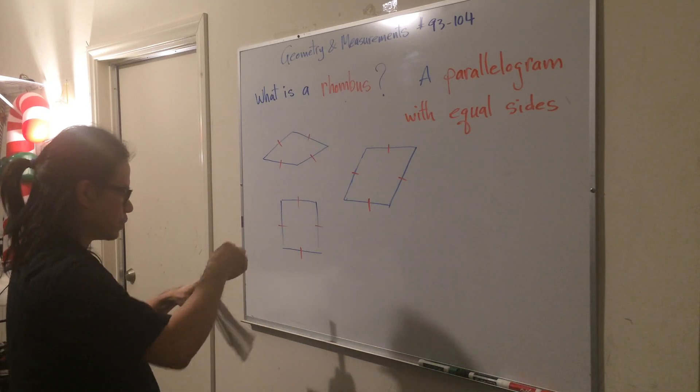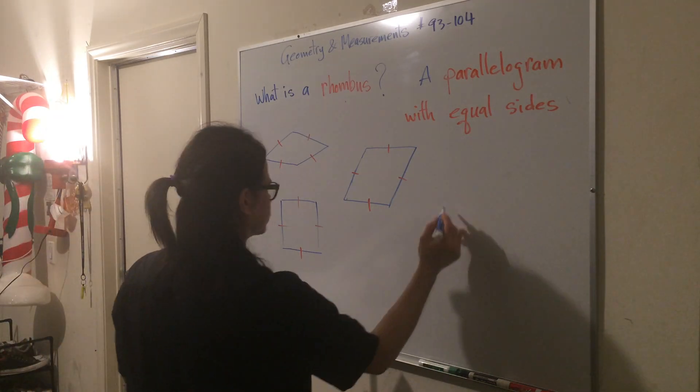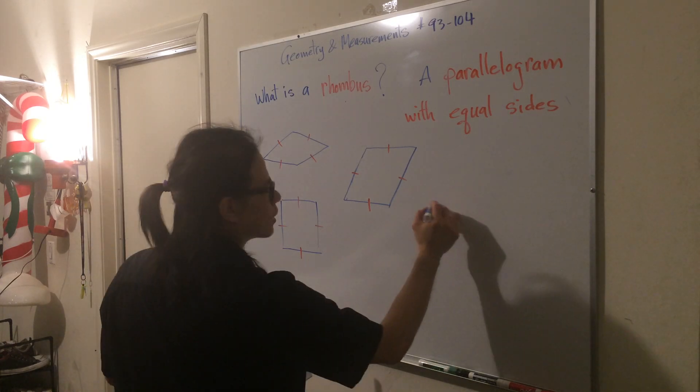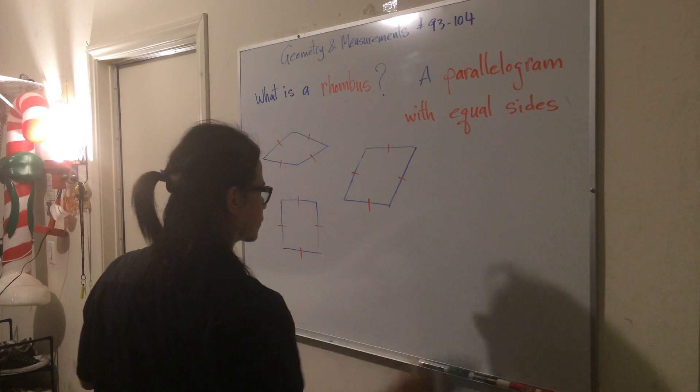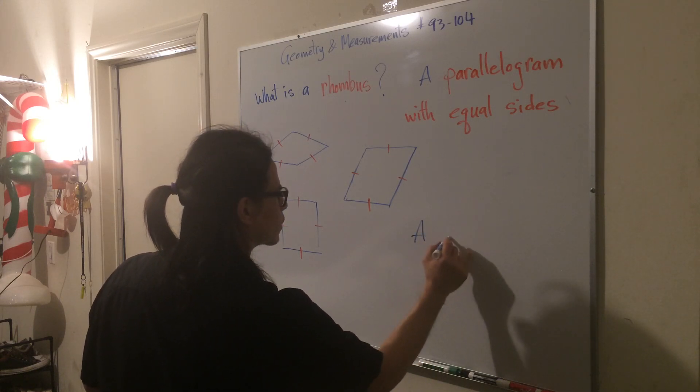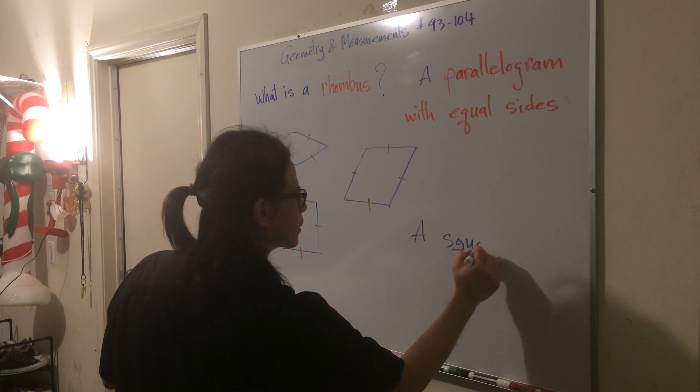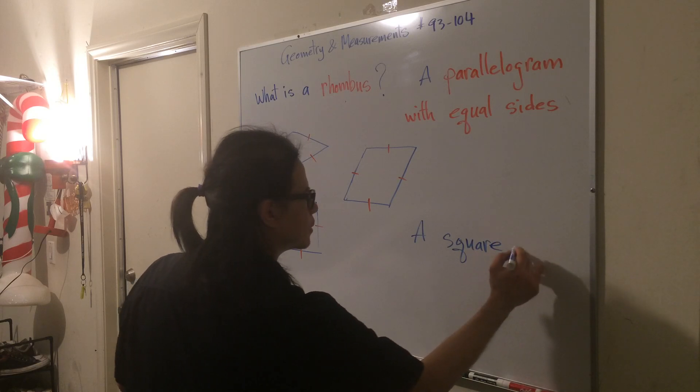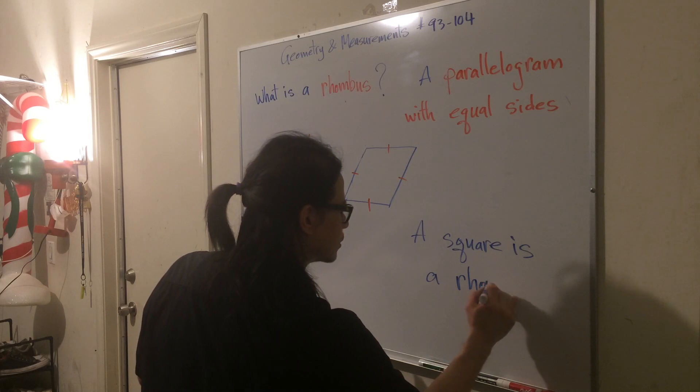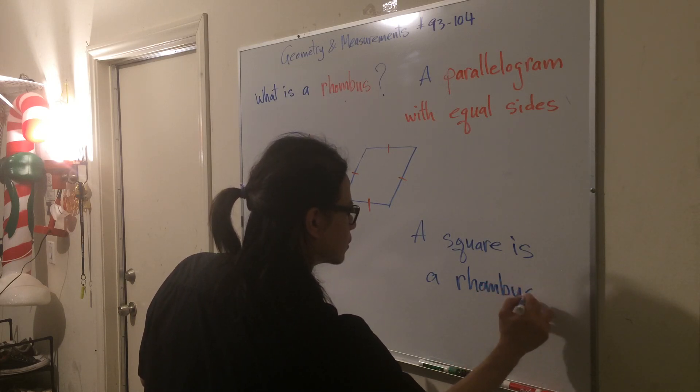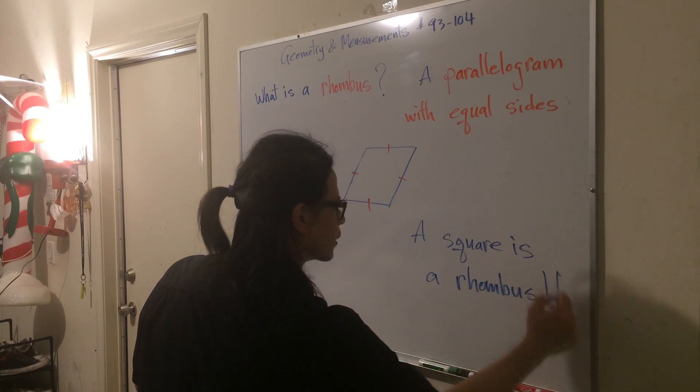So let's write it down so that we'll remember easier. A square is a rhombus. Believe it or not. Okay.